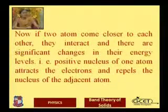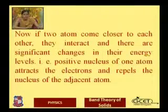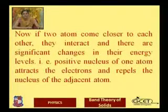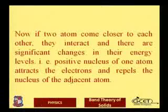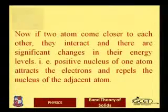Now, if two atoms come closer to each other, when we consider an isolated atom we think about its discrete energy levels. But when two atoms come into the vicinity of each other, if we consider only the outermost shell electron of a sodium atom — the 3s1 electron — both atoms have the same quantum numbers. This means Pauli's exclusion principle is violated.